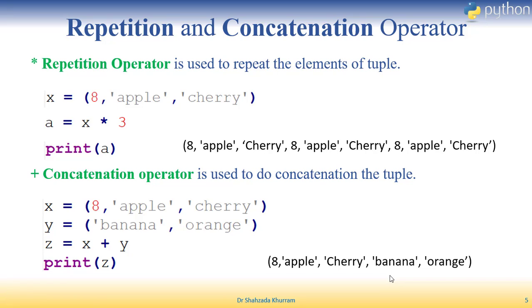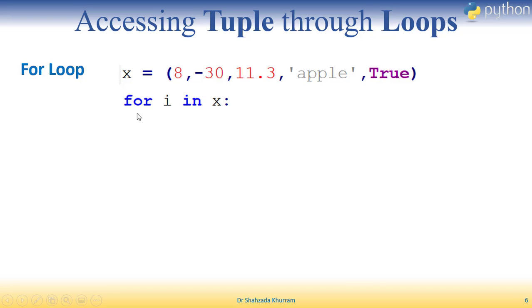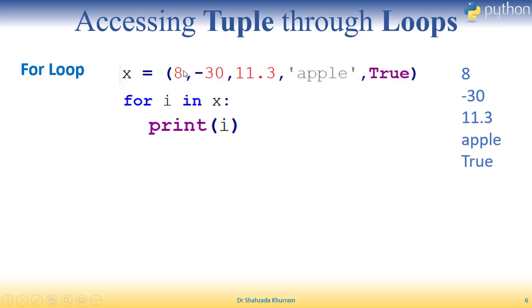Next topic is accessing tuple through loops. Hum tuple ke elements ko through loops bhi access kar sakte hain. Pehle hum for loop lete hain. X ke andar kuch elements store kiye hue hain. For loop ka syntax: for i in x — x ek tuple hai. End pe print i karna hai. Toh bari bari pehle 8 uthayega, i mein store karega aur print kar dega, phir minus 30, 11, apple, true — is tarah result dega.